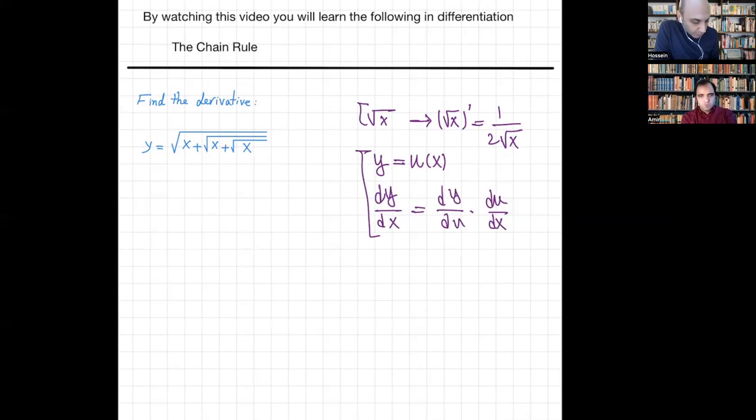So I start from this part, define this as u, and then I'm going to have y equals square root of u, and the derivative of y with respect to u is u prime divided by 2 times the square root of u. And that's equal to dy over du.